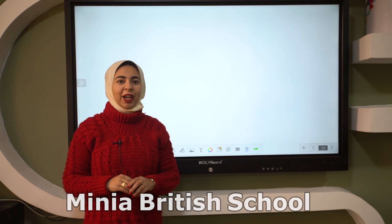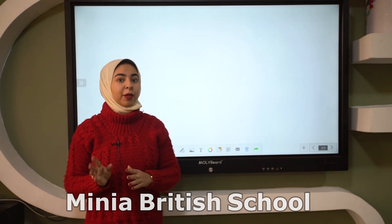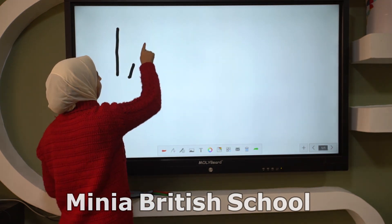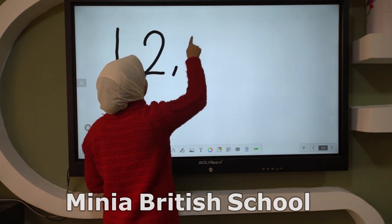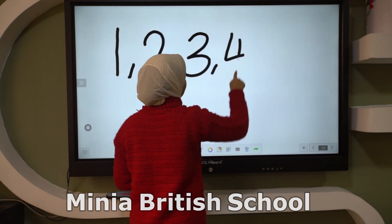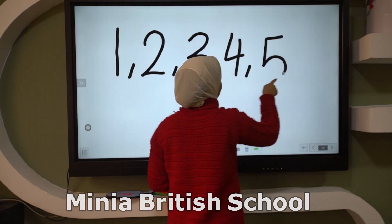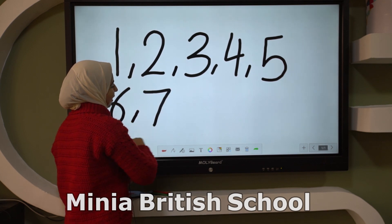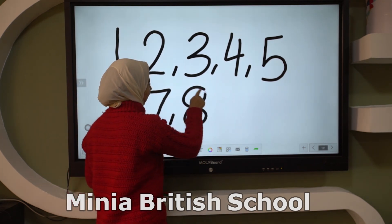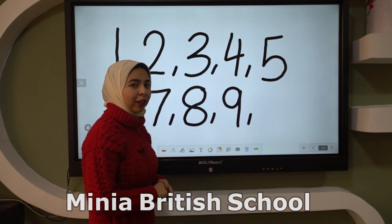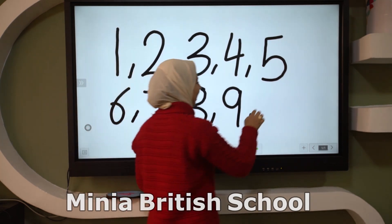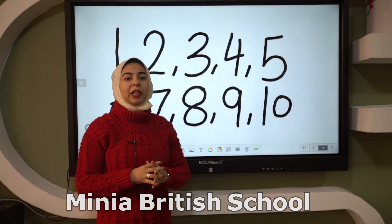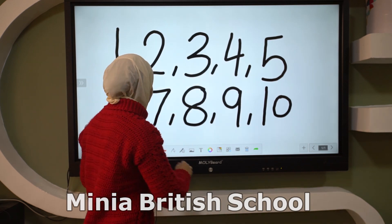Hello KG, good morning! Today we will make a quick revision about the numbers from 1 to 10. Let's go one by one: 1, 2, 3 — excellent! 4, 5 — excellent! 6, 7, 8, 9, 10 — excellent! How do we write 10? A 1 and then a 0 — excellent! Today KG we have a new concept, let's see it.